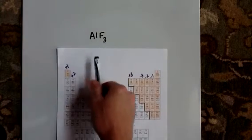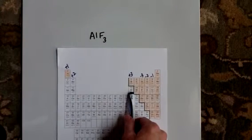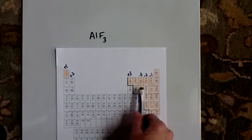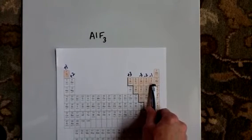Let's take a formula and get the name. Before you name a compound, you need to know if it's ionic or covalent. So look at the elements and see — aluminum is a metal, fluorine is a non-metal, so this is ionic.